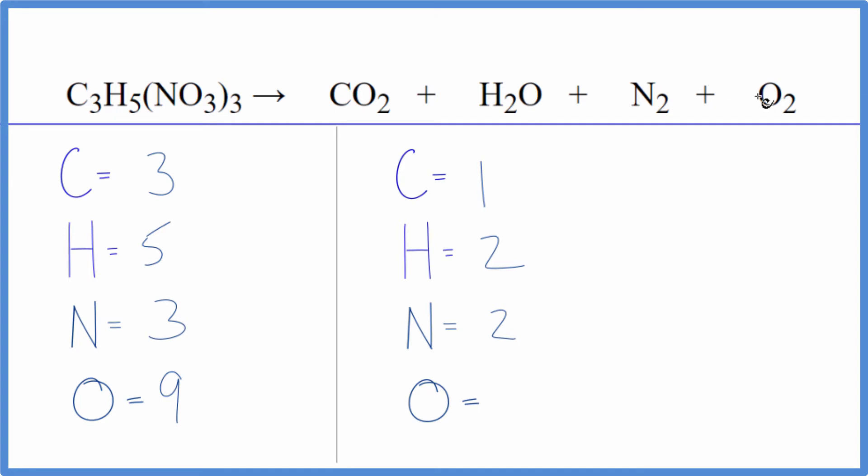Product side we have the one carbon, two hydrogens, two nitrogens, and then two plus one plus two, five oxygen atoms.